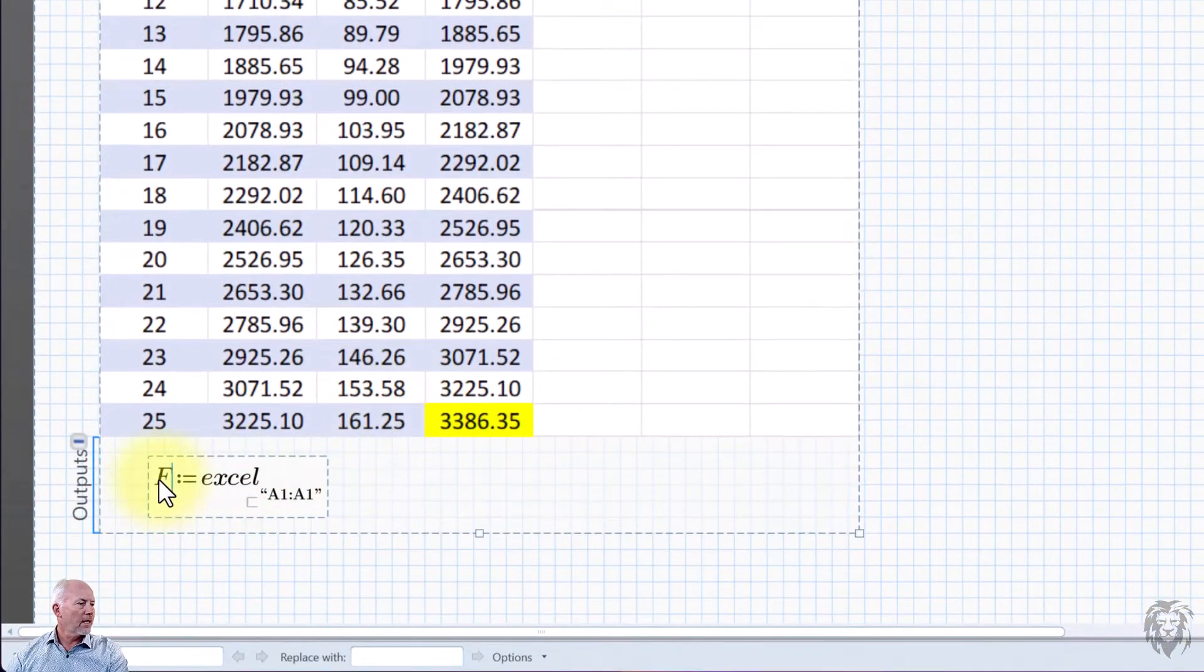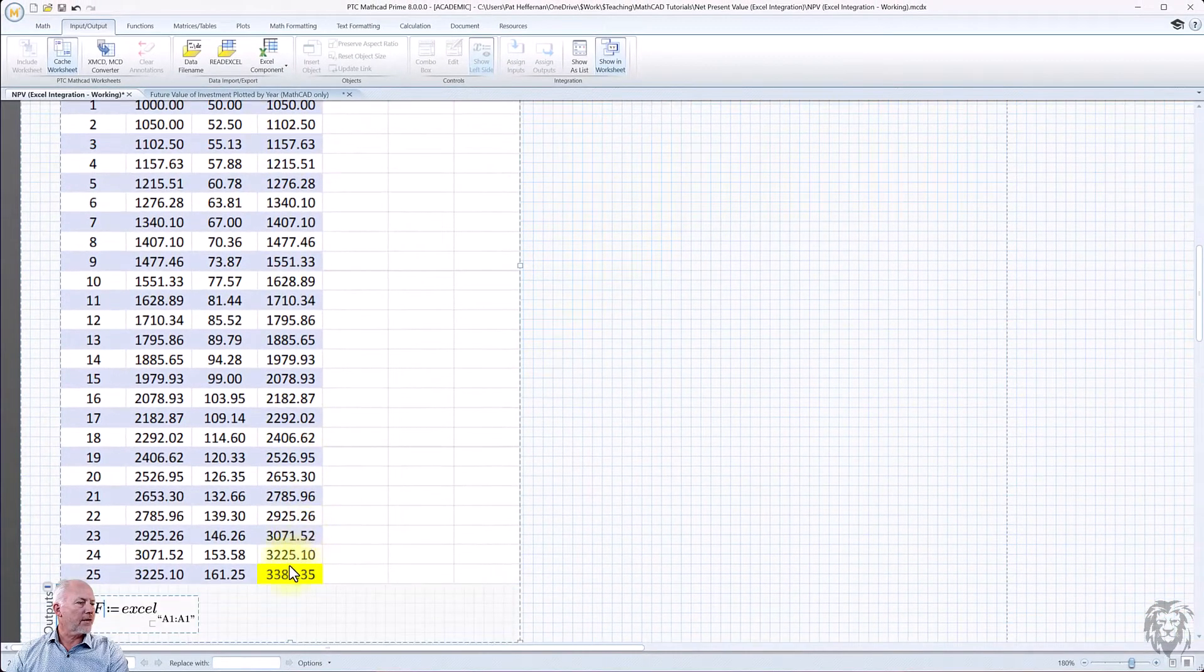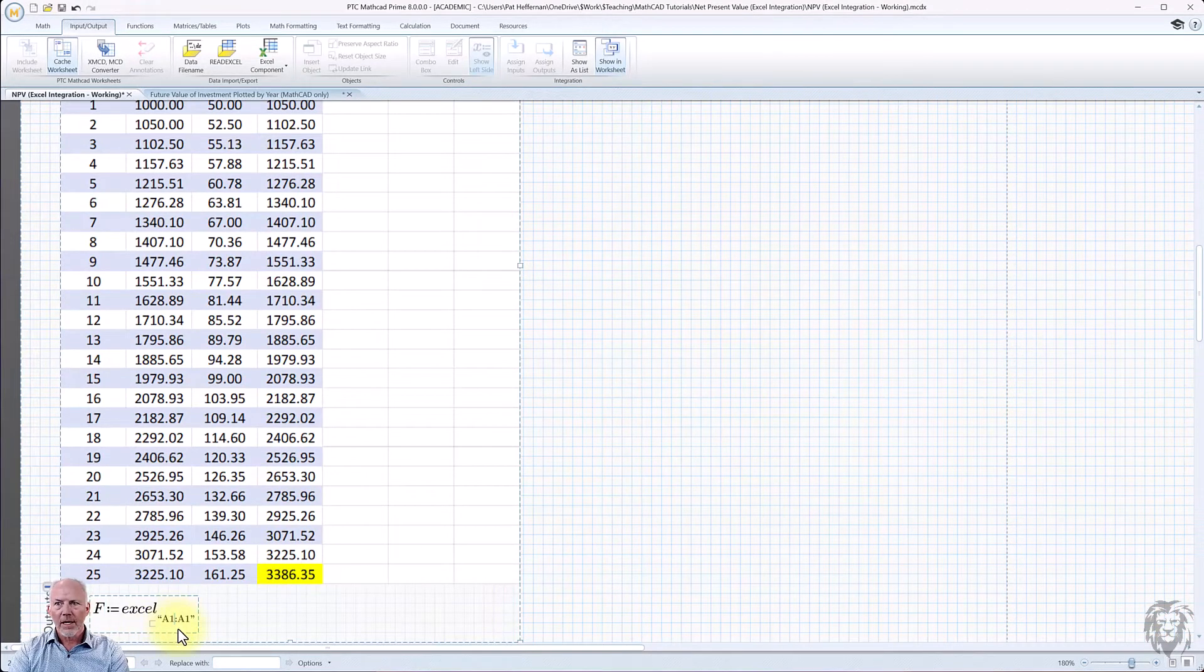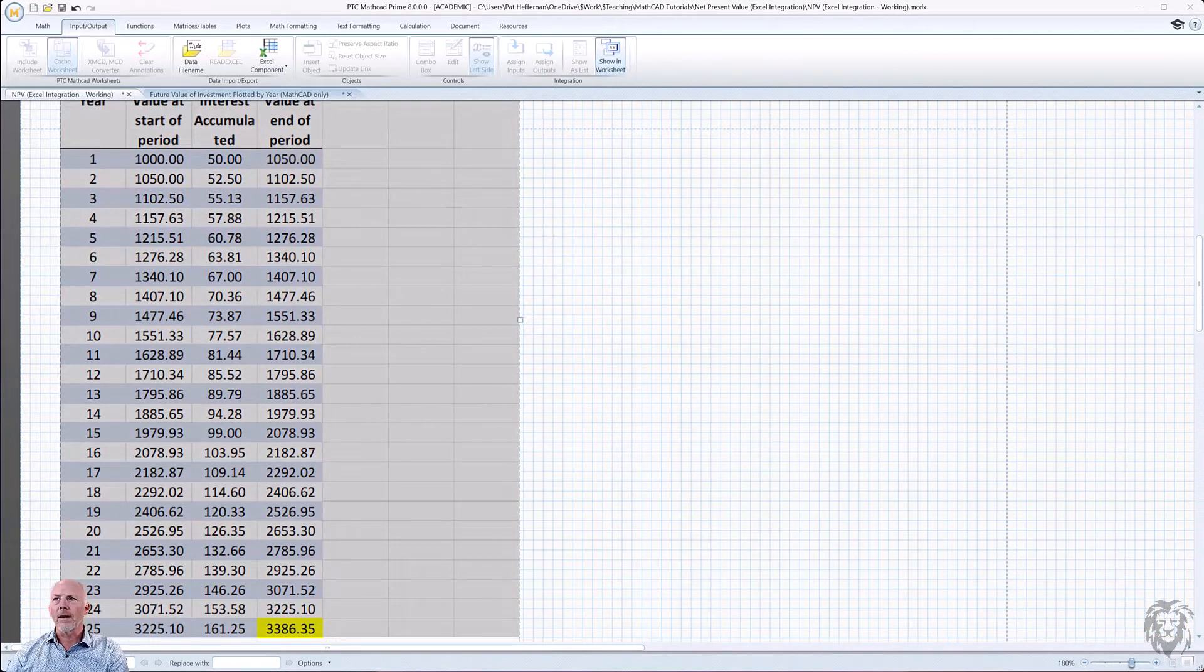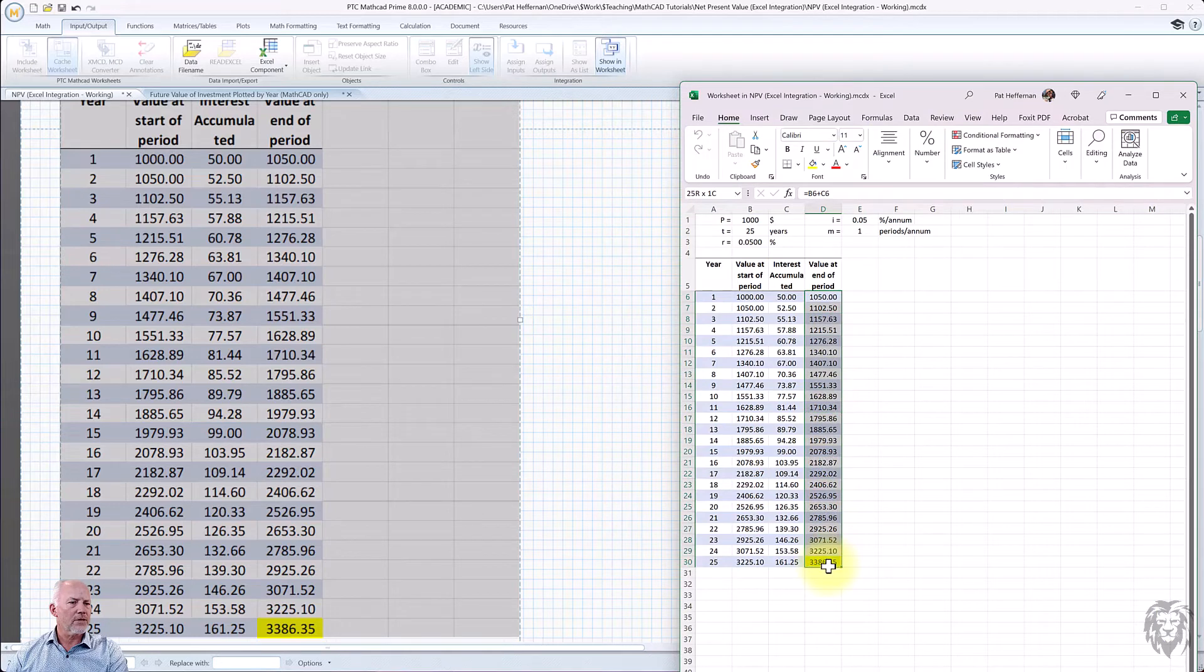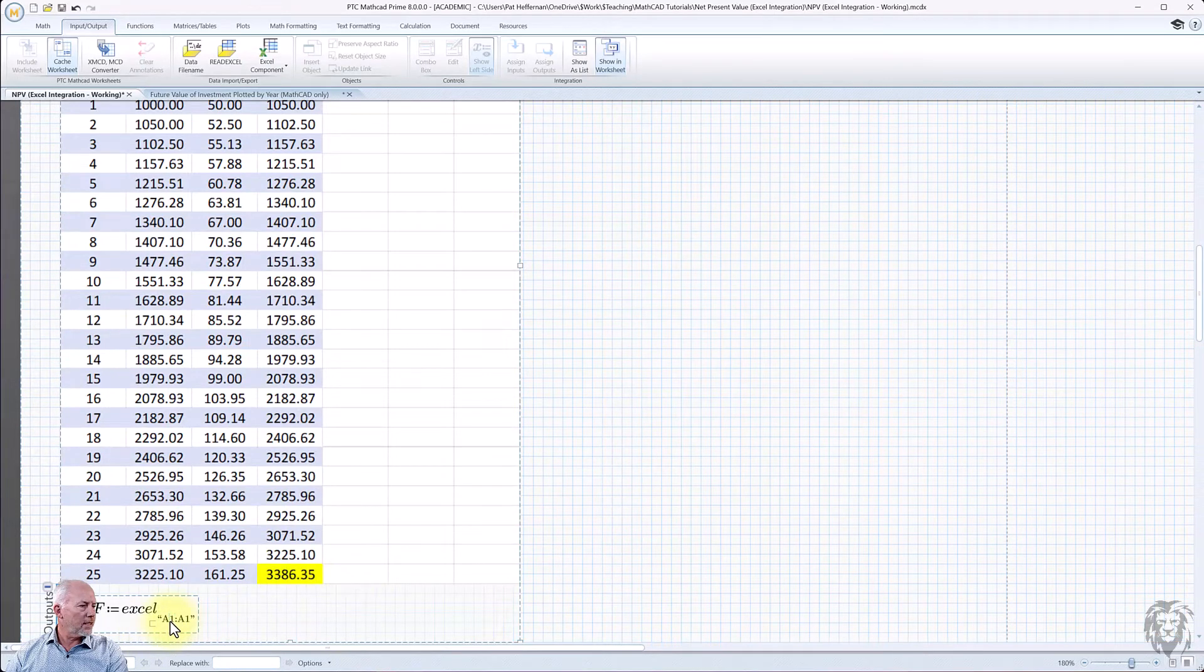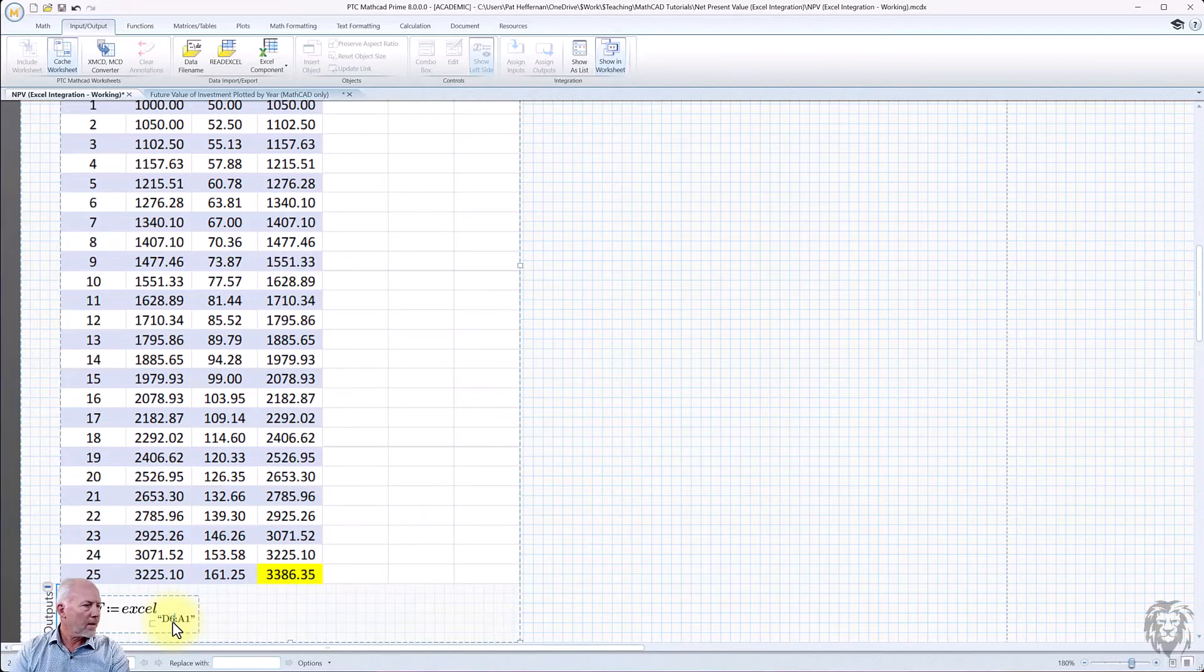So we want to assign it to something. So in this case, we're going to have an array called F for future values, Excel. And in this case, what we want to do is we want to choose the entire range from here, the 1050 down to 3385. Now I happen to know that's D6 to D30. If I wasn't sure I could double click in here. What you didn't see is Excel opened off camera. So let me just bring that in. And so we're interested in this period here, which is D6 to D30. Okay. So D6 to D30.